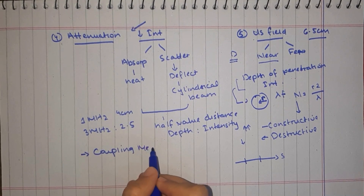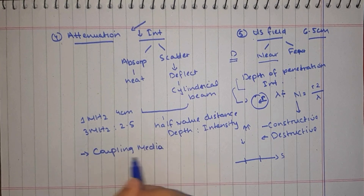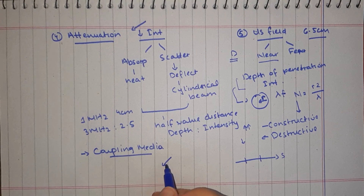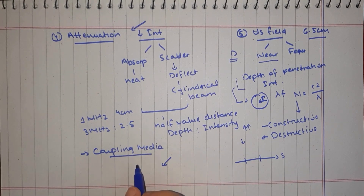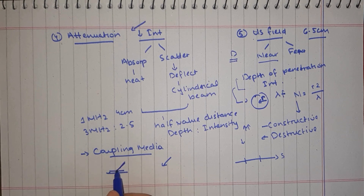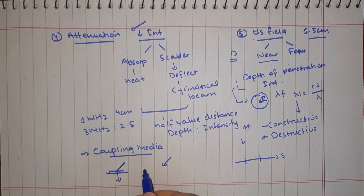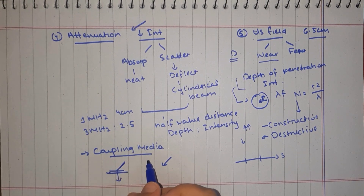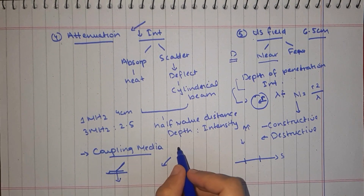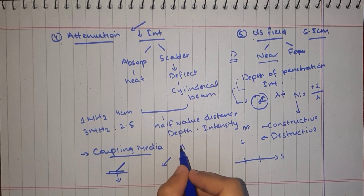The next major and most important parameter is ultrasonic beam transmission. Sound waves do not travel well through air, and the same principle applies to ultrasonic waves. If the transducer head is placed on skin without a medium, transmission is poor. So we place a gel or medium between the head and the skin to maximize transmission. The coupling medium helps transmission. The most commonly used coupling medium in clinical settings is aquasonic gel.